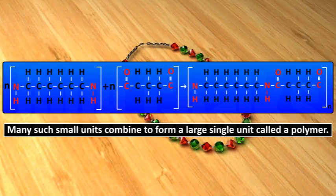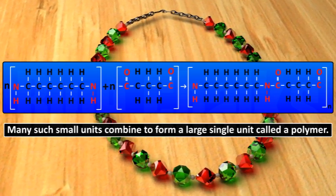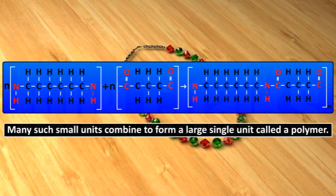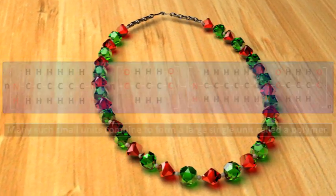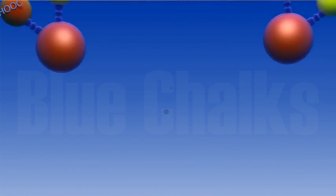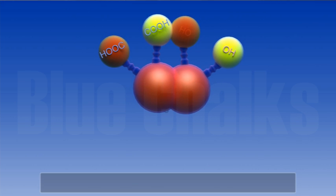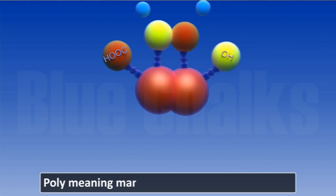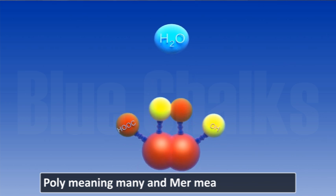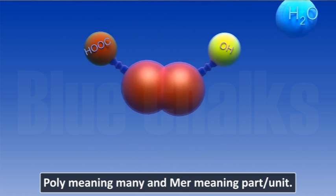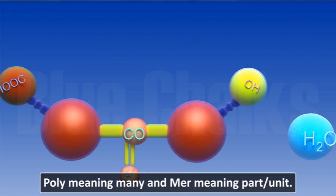The word polymer comes from two Greek words: poly meaning many and mer meaning part or unit. So a polymer is made of many repeating units called monomers.